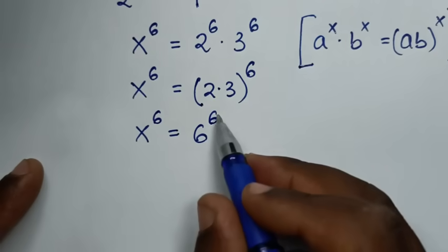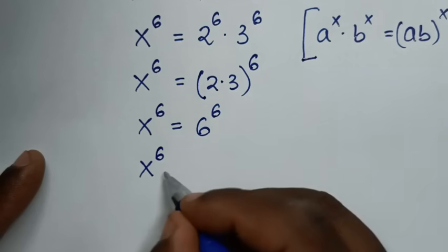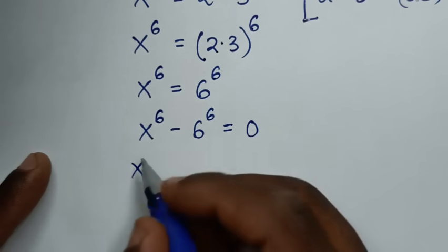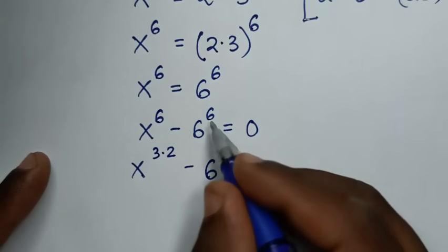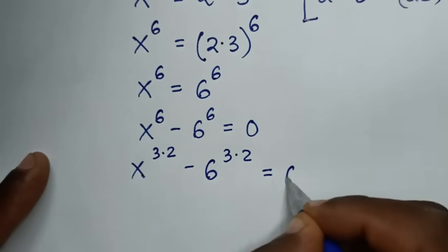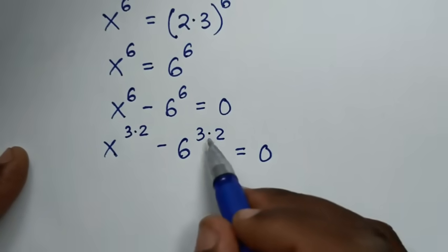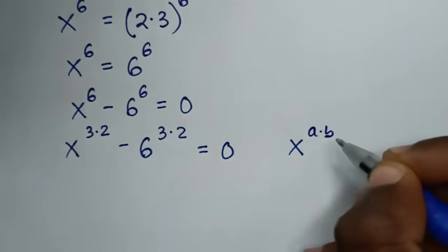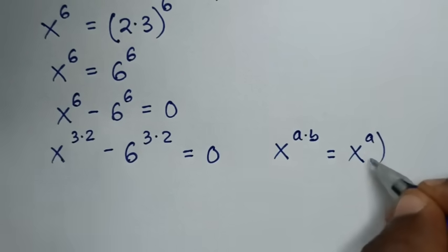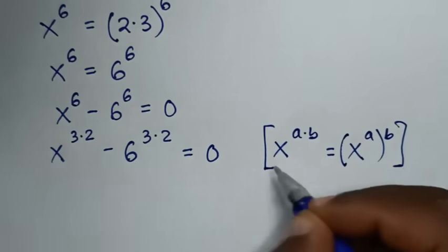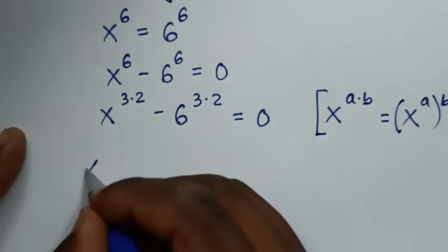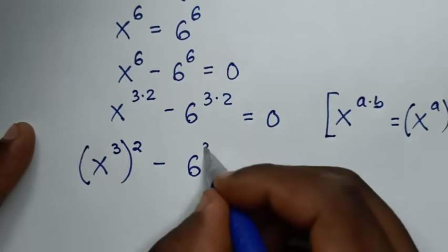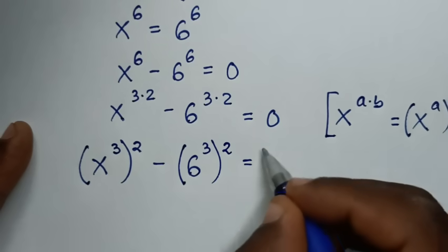Then we take 6 to the power of 6 to the left side, so it will be x to the power of 6 minus 6 to the power of 6 is equal to 0. Then, since 6 is the same as 3 times 2, x to the power of 6 is the same as x to the power of 3 times 2, and 6 to the power of 6 is the same as 6 to the power of 3 times 2. This is in the form of x to the power of a times b, which equals (x to the power of a) inside bracket, to the power of b outside. So it will be (x to the power of 3) to the power of 2, minus (6 to the power of 3) to the power of 2, is equal to 0.